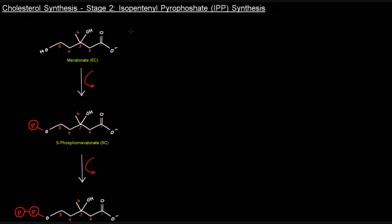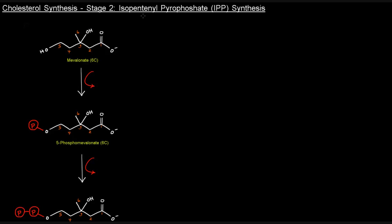So next up in stage 2, we're going to be converting mevalonate into isopentenyl pyrophosphate, or IPP, so stage 2 IPP synthesis.